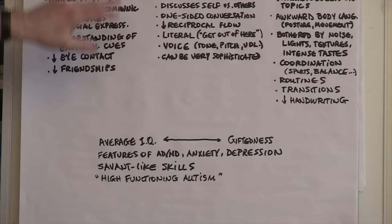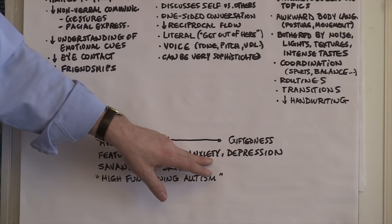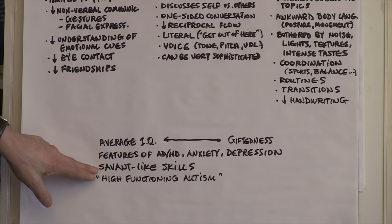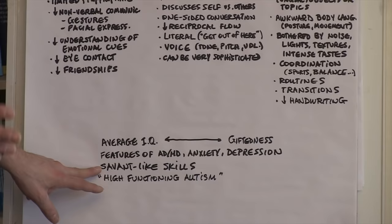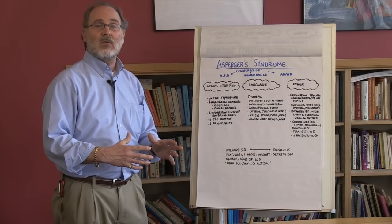Asperger's often manifests itself in features of attention deficit hyperactivity disorder. Anxiety becomes an issue at certain points with individuals with Asperger's, as does depression, and both need to be looked at and monitored carefully. They may have some savant-like qualities, as might those in the autism spectrum disorder category. And as mentioned earlier, they may also be referred to at times as high-functioning autistics.